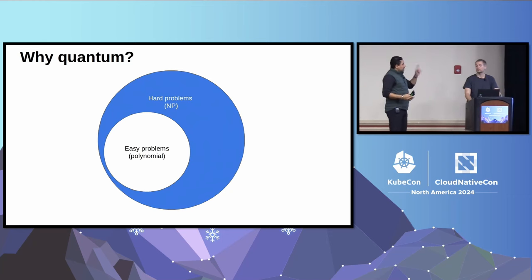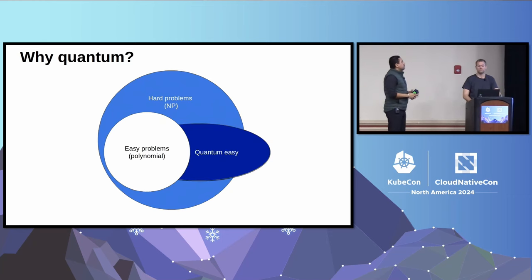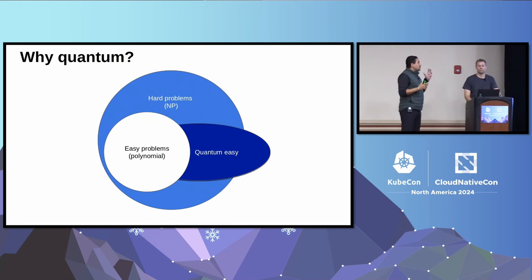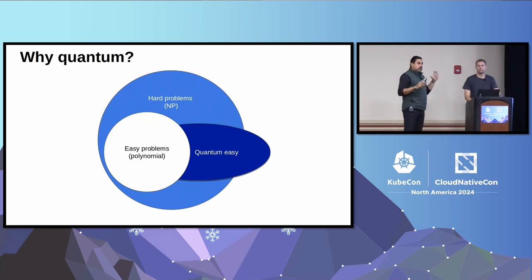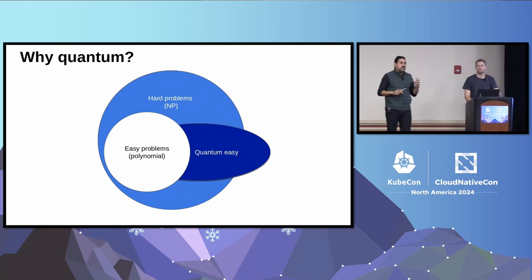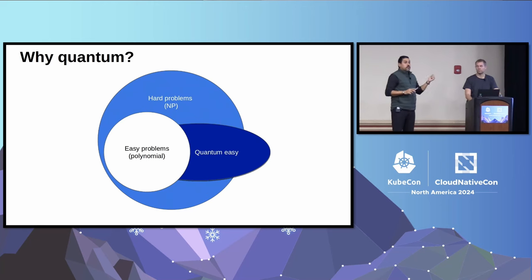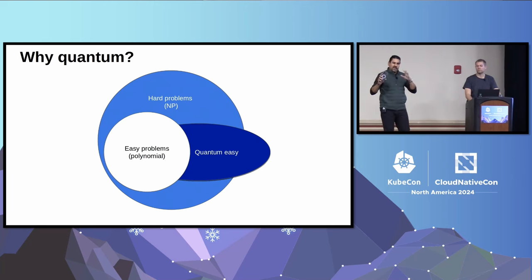The reason quantum is interesting is because quantum easy problems overlap the space of hard problems. There are problems that are easy for quantum computers to solve that are very, very hard for classical computers. We're going to talk about one in particular.